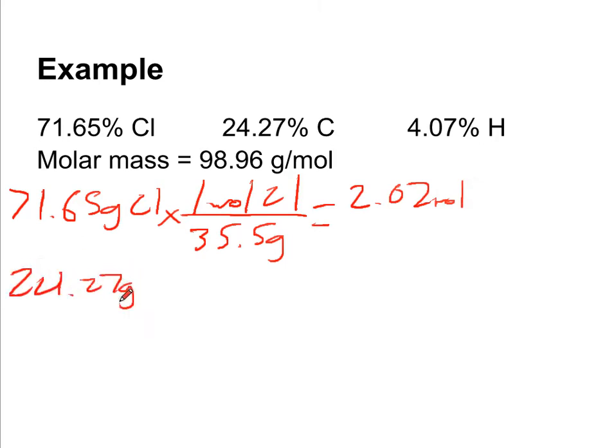24.27 grams of carbon. We convert that to moles. One mole of carbon has a mass of 12 grams. So 24.27 divided by 12 is going to give us 2.02.